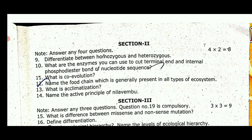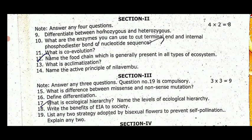Answer the short questions. Topics include: the difference between homozygous and heterozygous; what are the enzymes used for terminal and internal cutting; what is co-evolution; name the food chain which is generally present in all types of ecosystem; what is accumulation; name the active principles of nilavembu — kandipa, batu, chukonga — and also keelannelli.